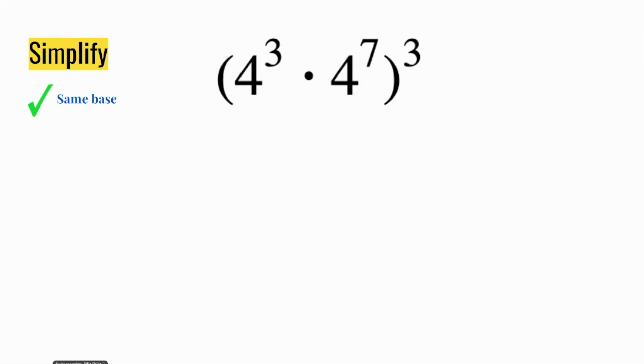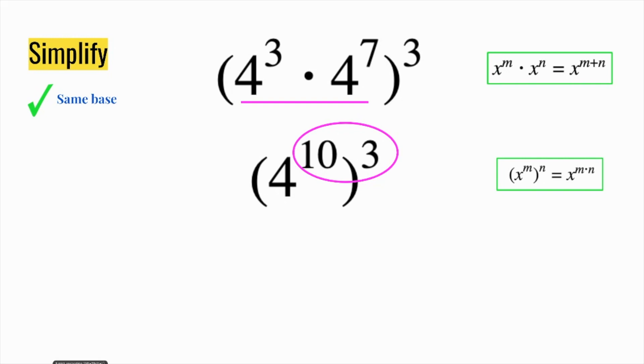Then kind of like order of operations, I'm going to focus on the middle of the parentheses first. So I have 4 to the 3rd times 4 to the 7th. My rule tells me to add those exponents. So 3 plus 7 is 10. So 4 to the 10th to the 3rd power. Now I'm going to focus on those exponents. My rule tells me to multiply those two numbers together to get a final answer of 4 to the 30th.